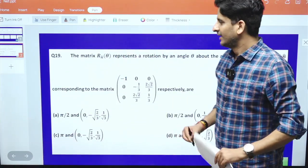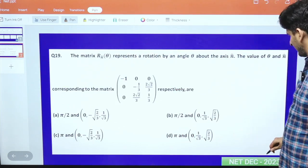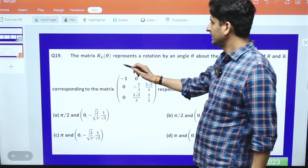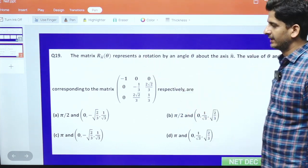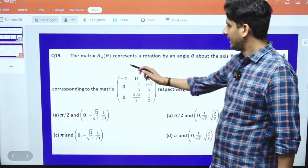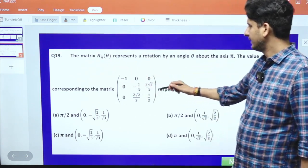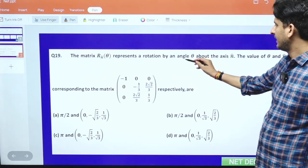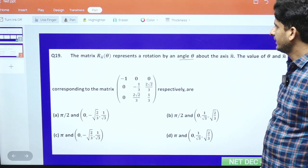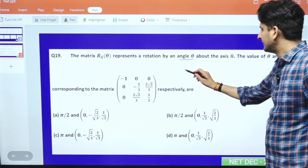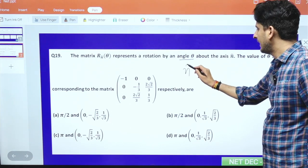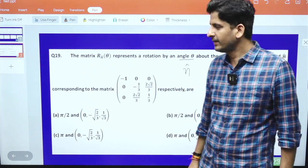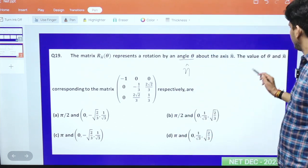Hello students, this is a question from NET December 2023 based on rotation matrices. The matrix R_theta represents a rotation by angle theta about the n-cap axis, which is a unit vector. We need to find the values of theta and n-cap.